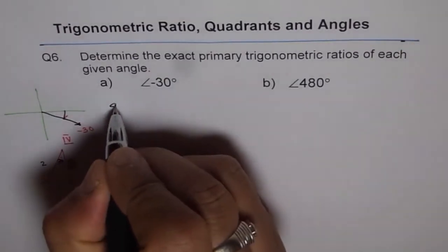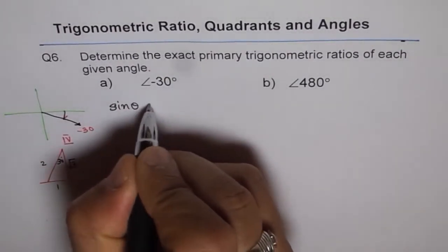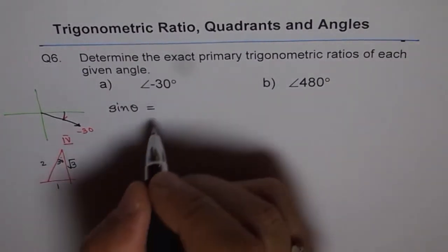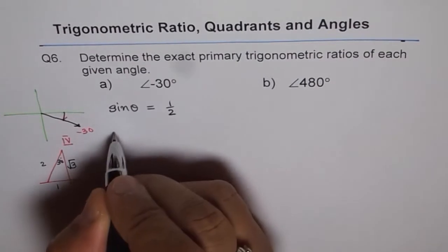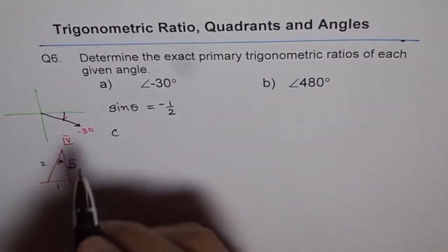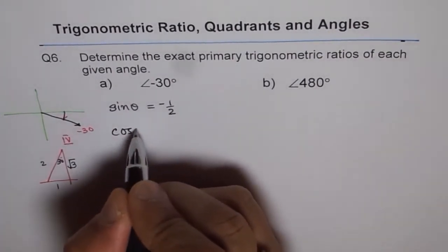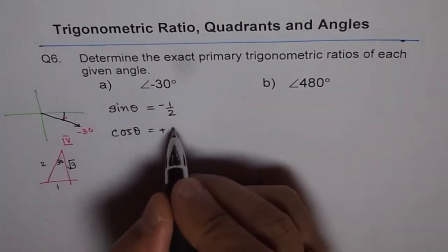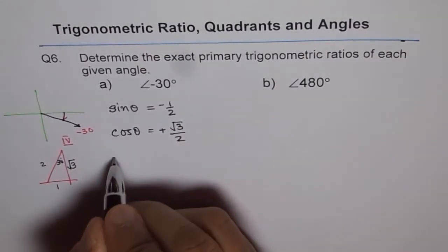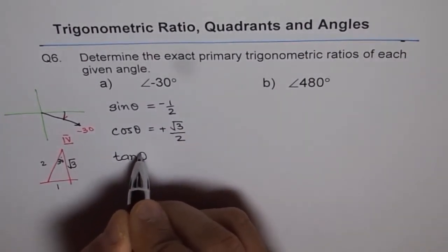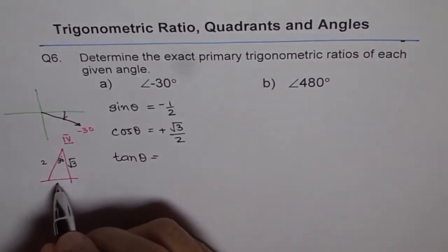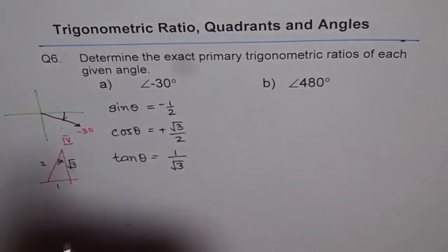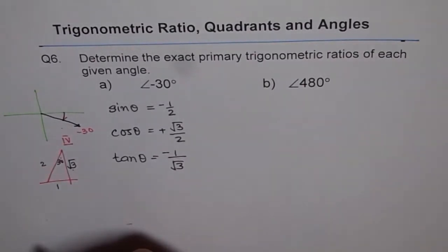We can write now that sine theta equals, from here, 30 degrees opposite over hypotenuse, so 1 over 2, but with minus sign because sine is negative. Cos is positive. Cos theta will equal positive square root 3 over 2. How about tan theta? Tan theta is opposite over adjacent, that is 1 over square root 3. Since we are in quadrant 4, that has to be negative.